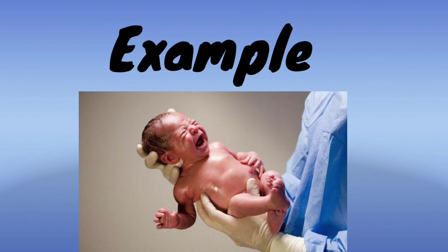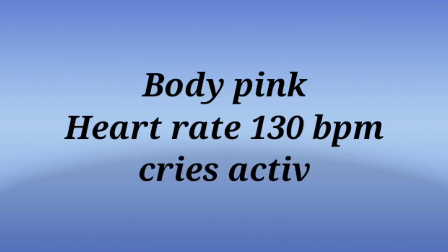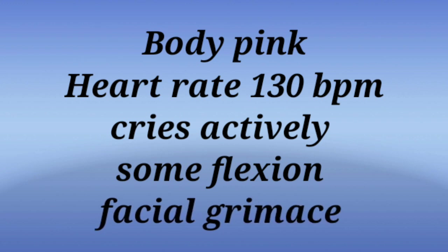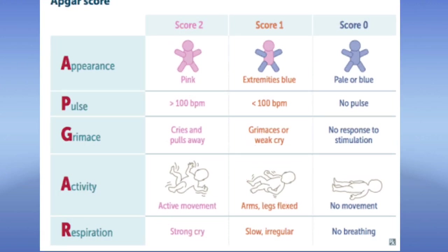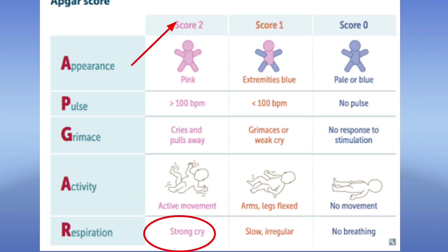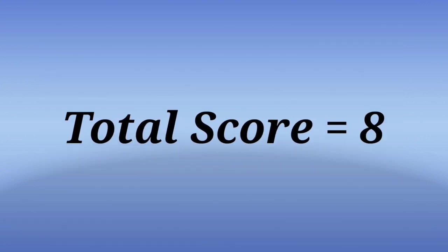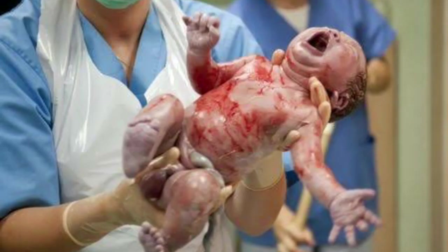For example, a one-minute evaluation shows: body is completely pink (score 2), heart rate is 130 beats per minute — more than 100 (score 2), baby cries actively — good strong cry (score 2), some flexion of extremities (score 1), and on stimulation there is a facial grimace (score 1). The total score is 8, indicating the baby is healthy and requires only routine newborn care.